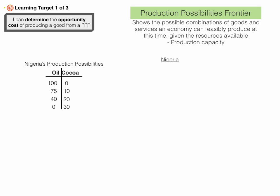Let's take a look at a PPF for Nigeria. We're going to simplify it and pretend they can only make two goods: oil and cocoa. Given the resources Nigeria has, they can make 100 barrels of oil, but if they do that, they can't make any cocoa because all the resources were used up in oil production. If Nigeria wants to make 10 pounds of cocoa, they can only make 75 barrels of oil. Perhaps another possible combination is 40 oil and 20 cocoa. And a final production possibility is zero oil and 30 cocoa, where all resources go into cocoa production.